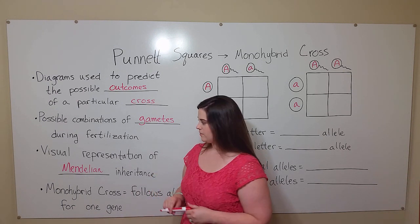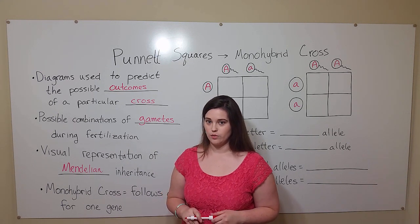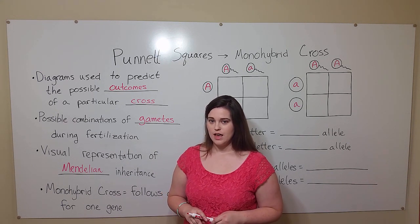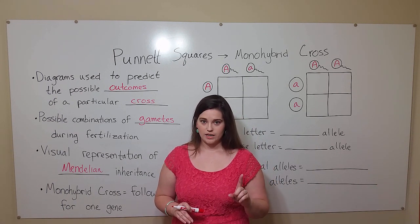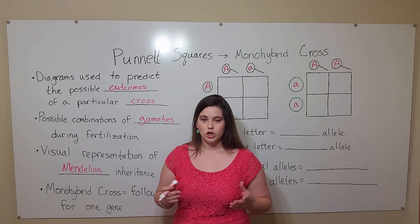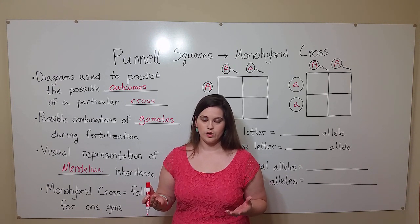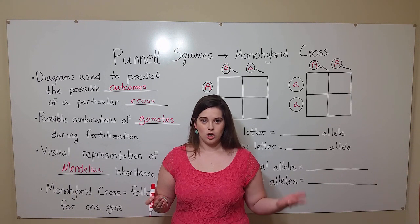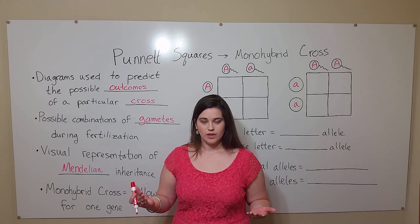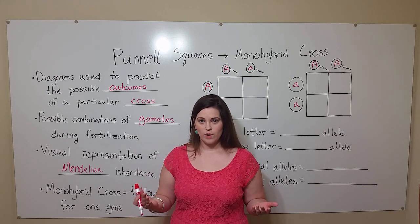In today's video, we're going to be talking specifically about monohybrid crosses. These are crosses that follow the alleles of one gene. Alleles are alternative forms of a gene. For example, if the gene is for height, you might have a tall allele or a short allele. If the gene is for flower color, the plant might have a purple allele and a white allele.